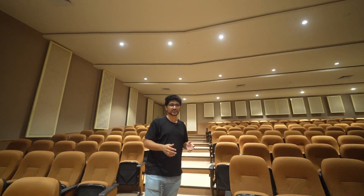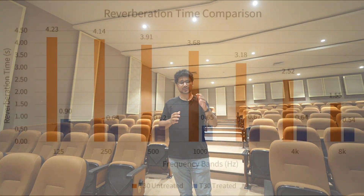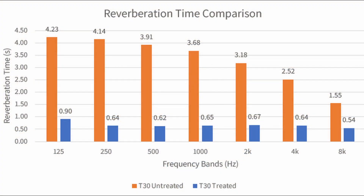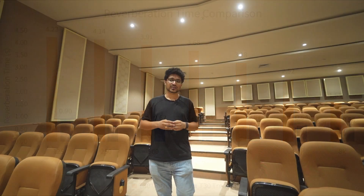Now let me show you the result. When we conducted the acoustical test after installing all these absorbers, you can look at this chart and see that the reverberation has reduced significantly for all the frequencies. It's between 0.6 and 0.9 seconds from 125 Hz to 8,000 Hz. This was an ideal scenario for us.